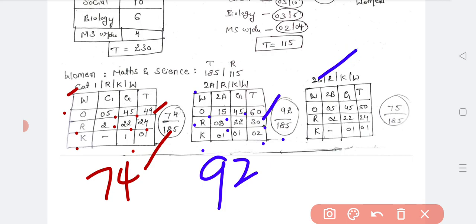2B: Women 2B 5, general 45, total 50. Rural 2 plus 22, 24. Kannada medium only general 1. So totally 75 seats are reserved for 2B rural Kannada medium women.